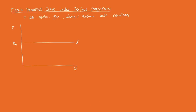The firm can sell all that it wants at the prevailing market price. So a firm's individual revenue function is equal to P times Q. But P is fixed — it's a given market price that the firm cannot set.